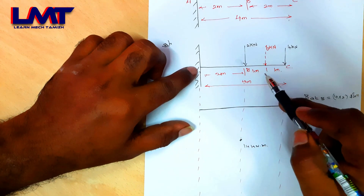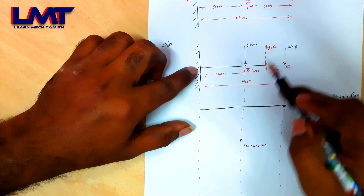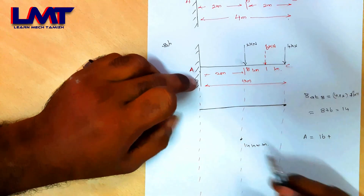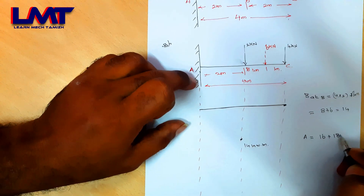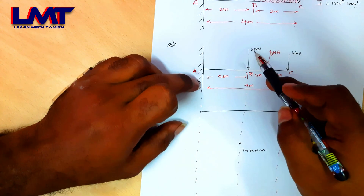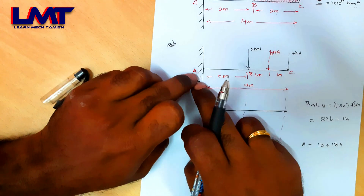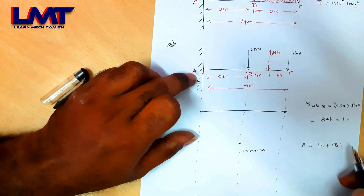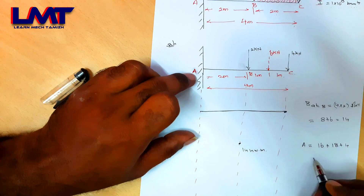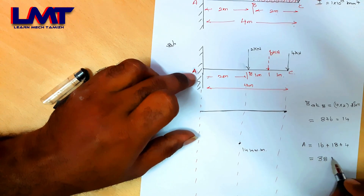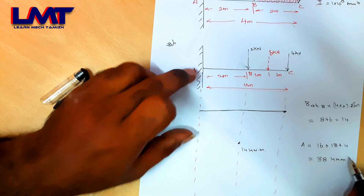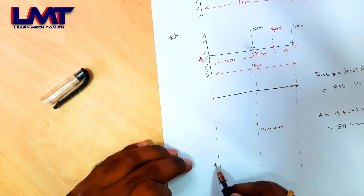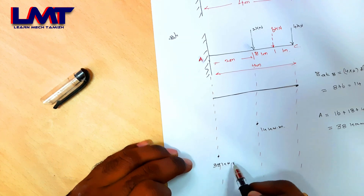Continuing the bending moment at E: 6 kN load is at 3 m distance, so 6×3 = 18. The 2 kN load is at 4 m distance so 2×4 = 8. Total: 16 + 18 + 8 = 38 — wait, corrected: 20 + 18 = 38. So the bending moment at E is 38 kNm.